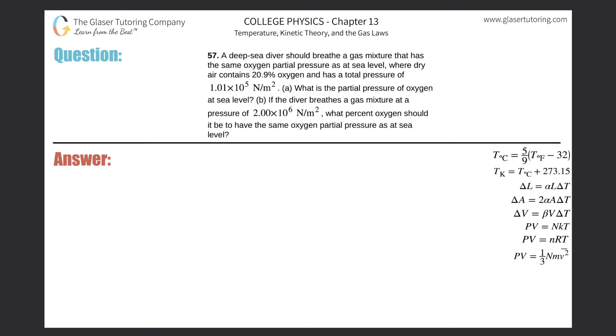Number 57, a deep sea diver should breathe a gas mixture that has the same oxygen partial pressure as at sea level, where dry air contains about 21% oxygen and has a total pressure of 1.01 times 10 to the fifth newtons per meter squared. What is the partial pressure of oxygen at sea level?